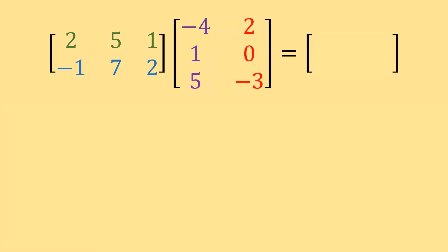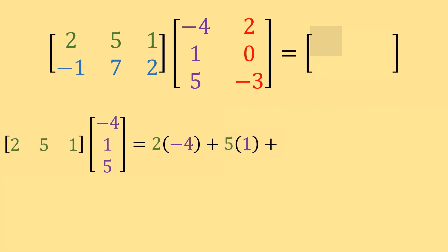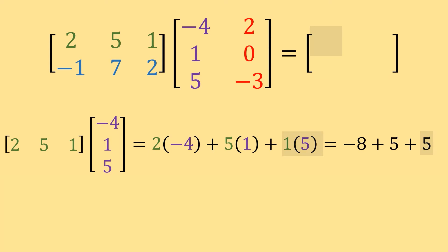To find the value in row 1, column 1 of our result, we take the first row of matrix A — 2, 5, 1 — and multiply it by the first column of matrix B — negative 4, 1, 5. We match up corresponding values and multiply, then add: 2 times negative 4 plus 5 times 1 plus 1 times 5, which equals negative 8 plus 5 plus 5, which equals 2.